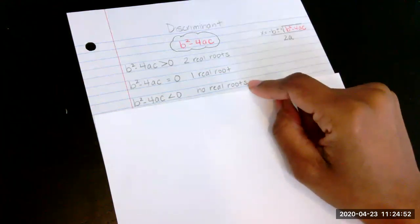And if you do b squared minus 4ac is less than zero, then you'll notice you'll have no real roots. That means your quadratic does not cross the x-axis.